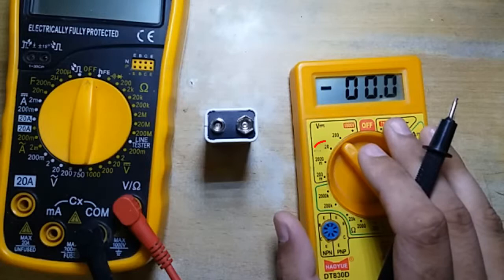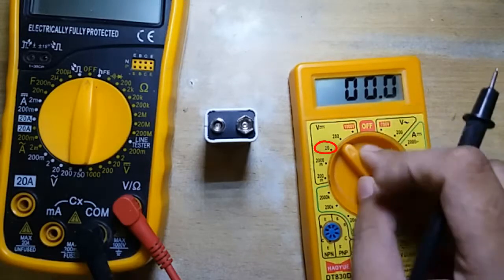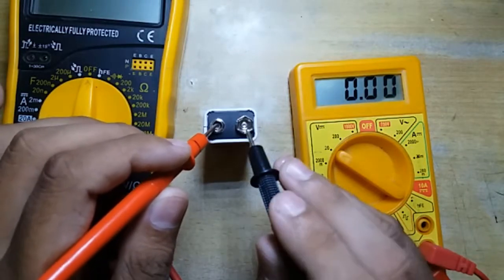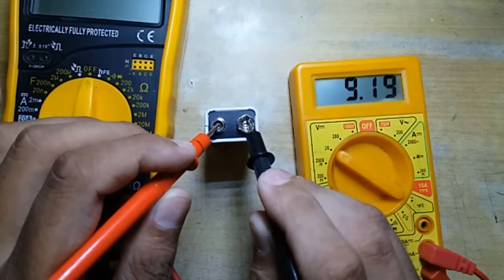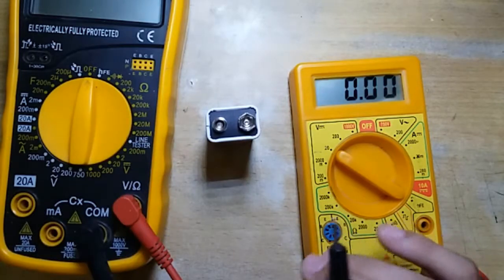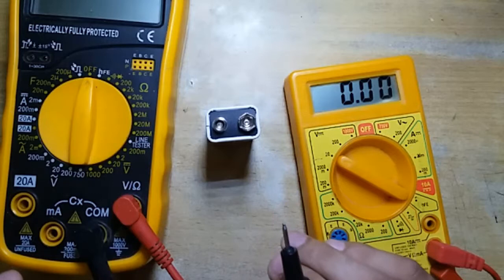And if I turn the dial to the 20 volt setting, a more accurate result we observe. Take a look, here we obtain 9.19 volts, which is far more accurate than just 9 volts because it gives more information about the measurement.